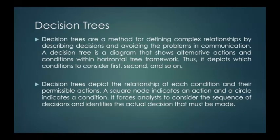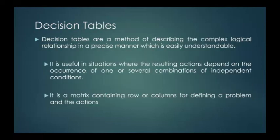Next, we have the decision trees. Decision trees are a method for defining complex relationships by describing decisions and avoiding the problems in communication. A decision tree is a diagram that shows alternative actions and conditions within horizontal tree framework. Thus, it depicts which conditions to consider first, second, and so on. Decision trees depict the relationship of each condition and their permissible actions. A square node indicates an action and a circle indicates a condition. It forces analysts to consider the sequence of decisions and identifies the actual decision that must be made.